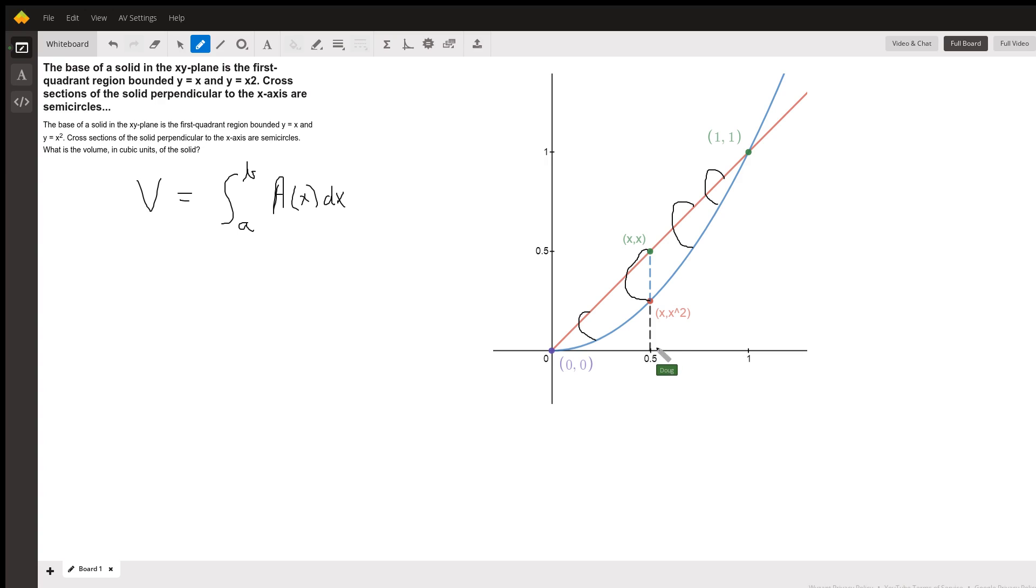Well, if I pick an x value here like 0.5, this distance right here is going to be 0.5 squared because we're on the graph of the parabola y equals x squared. In other words, the y coordinate of this point right here is going to be x squared.